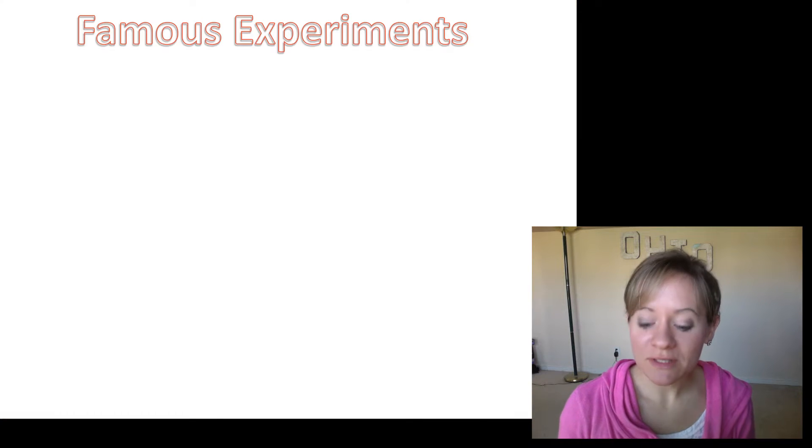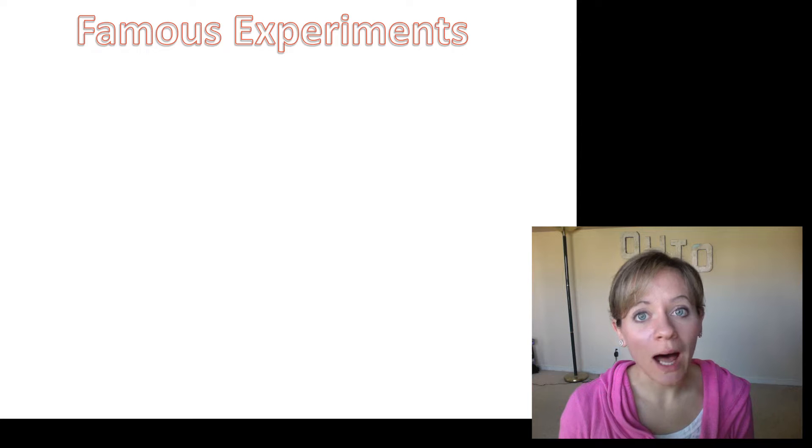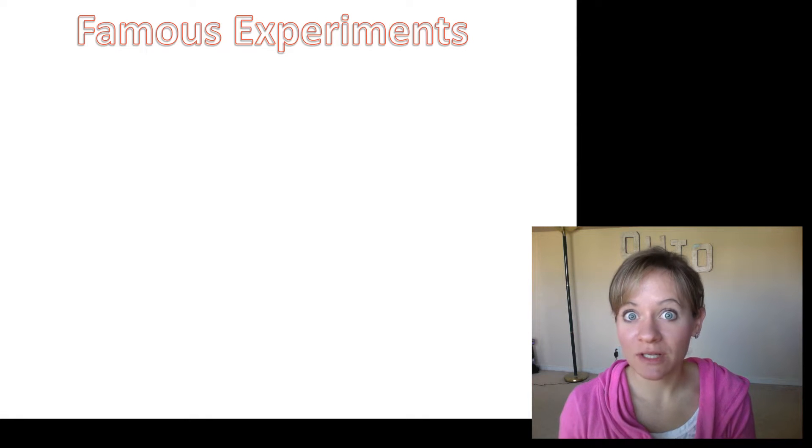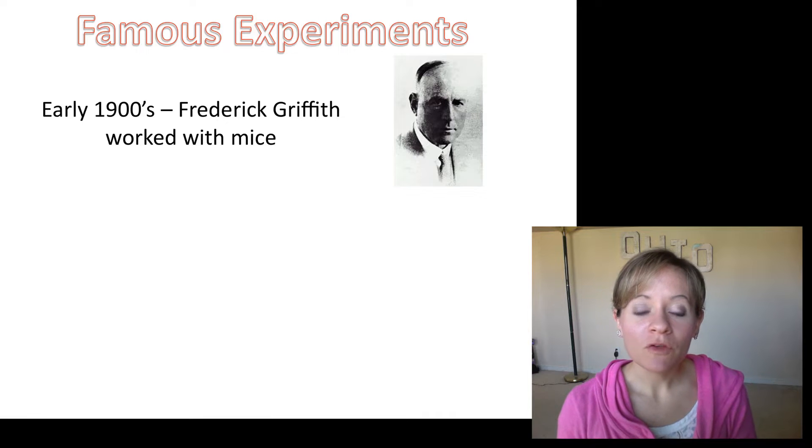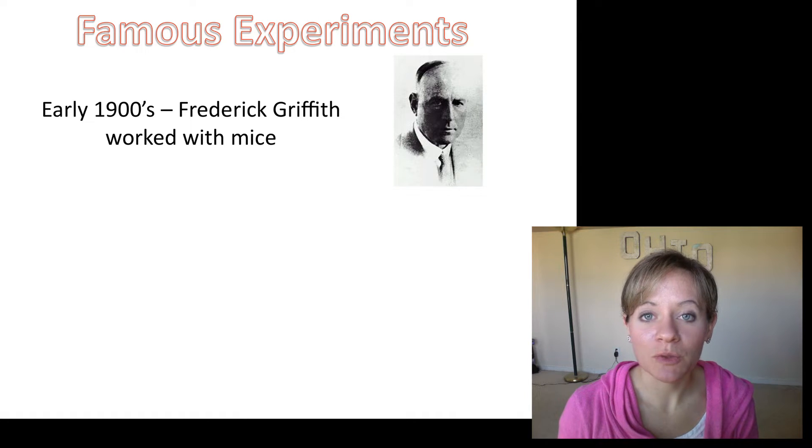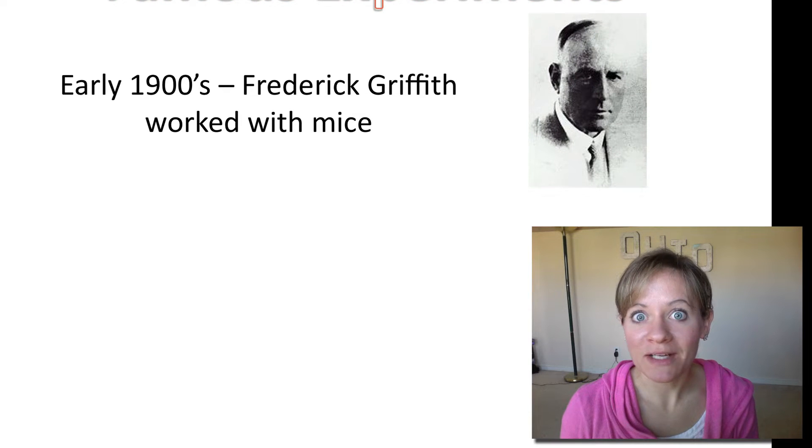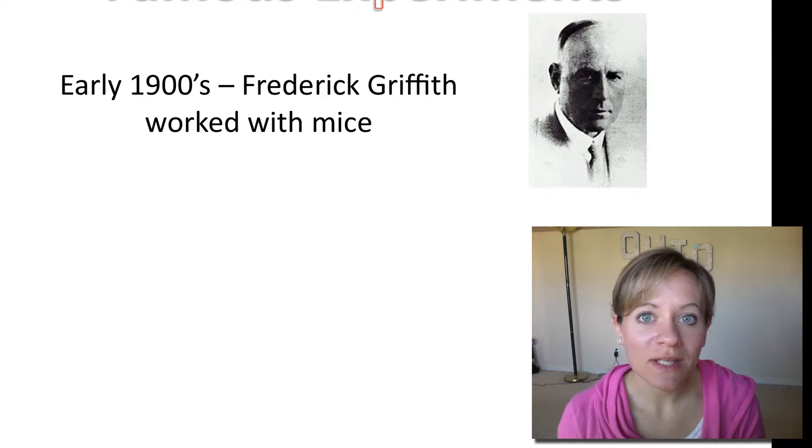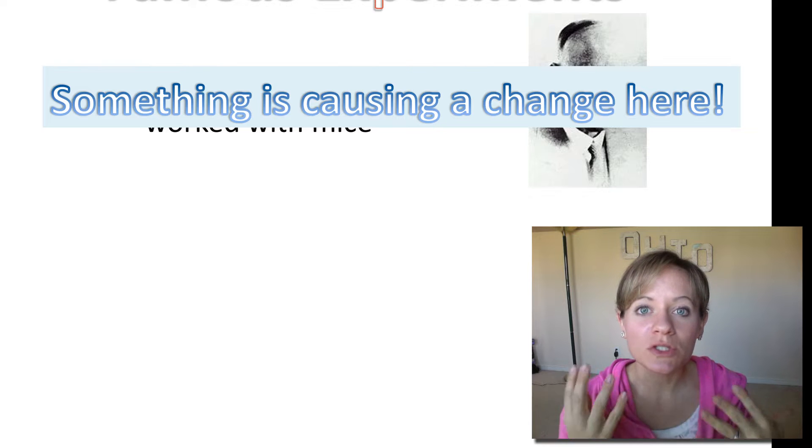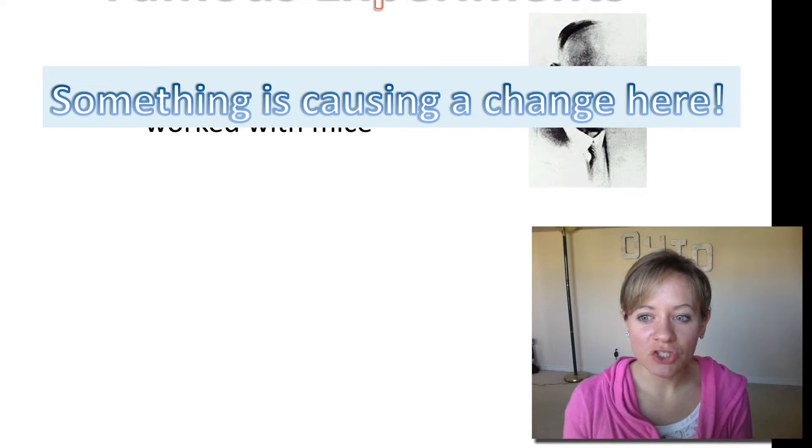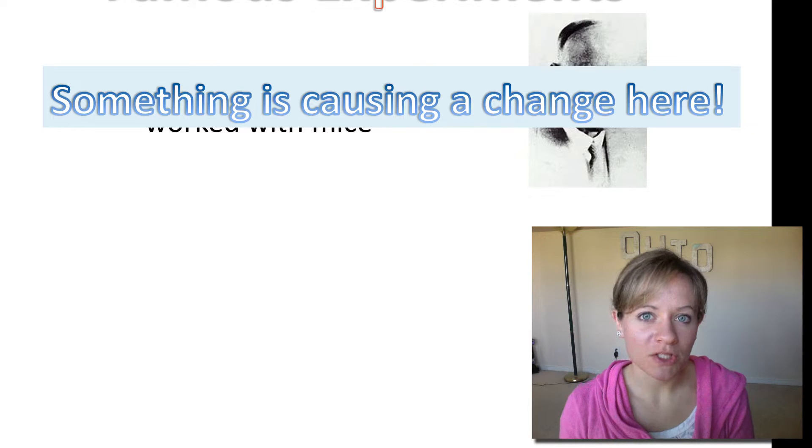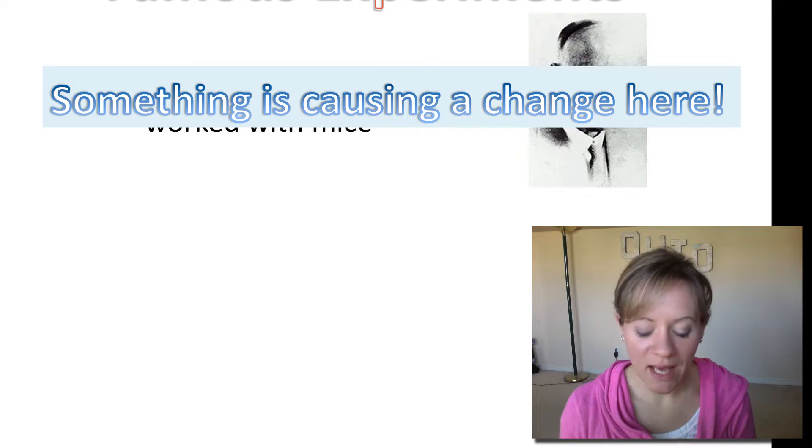Well, there were some famous experiments that we're going to talk a lot more about in class, but I'm just going to give you a very broad overview. The first big one was in the early 1900s with a man named Frederick Griffith, and he worked with mice and bacteria. He noticed that with these different types of bacteria, he was noticing a change in the mice. Something heritable is causing this change, and he didn't quite know what yet.